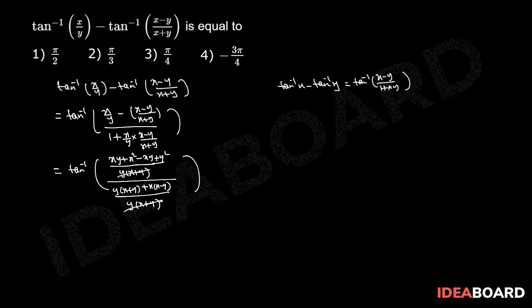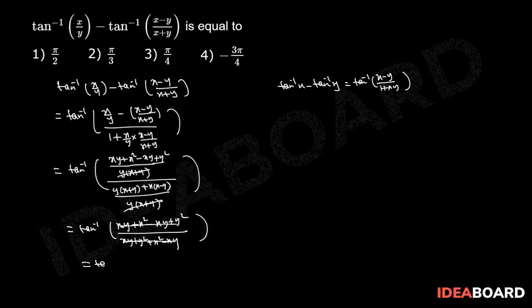The denominators cancel. Therefore we have tan inverse of (xy plus x squared minus xy plus y squared) divided by (xy plus y squared plus x squared minus xy). The numerator and denominator are equal and cancel.